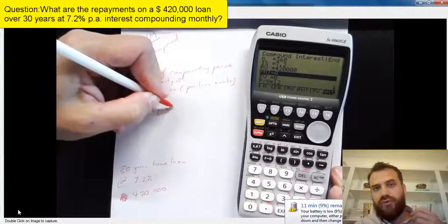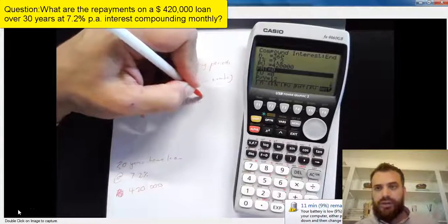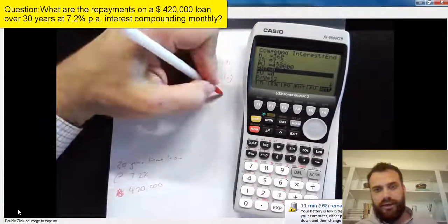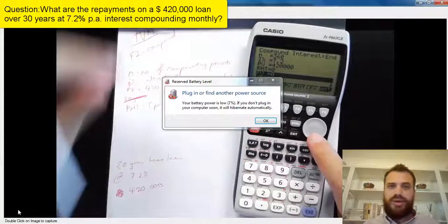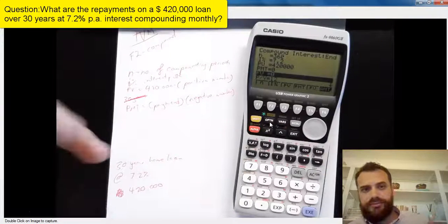Now, PMT stands for payment. That's the payment you're going to make every month. Now, that's going to come through as a negative value because it's money coming out of your pocket.